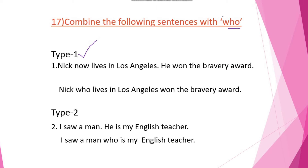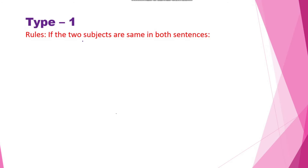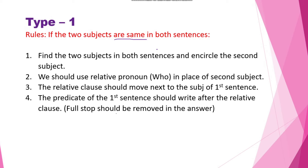You can observe here that in the first sentence the subjects are Nick and he — both are the same subjects. But in the second sentence, 'I' and 'he' are different, so that belongs to Type 2. For Type 1, if the two subjects are the same in both sentences, we should follow these rules. First, find the two subjects in both sentences and encircle the second subject.